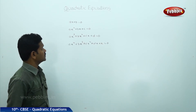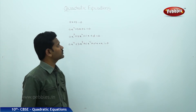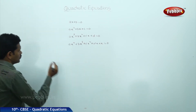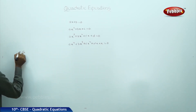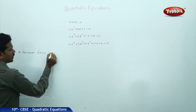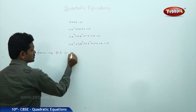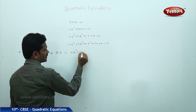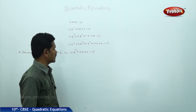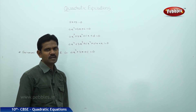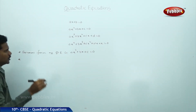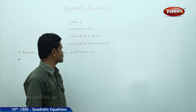In this section, we are discussing quadratic equations and their applications. Let us see the general form. The general form of a quadratic equation is Ax squared plus Bx plus C equal to 0, where A is the coefficient of x squared, B is the coefficient of x, and C is the constant term. The maximum number of roots of a quadratic equation is 2.